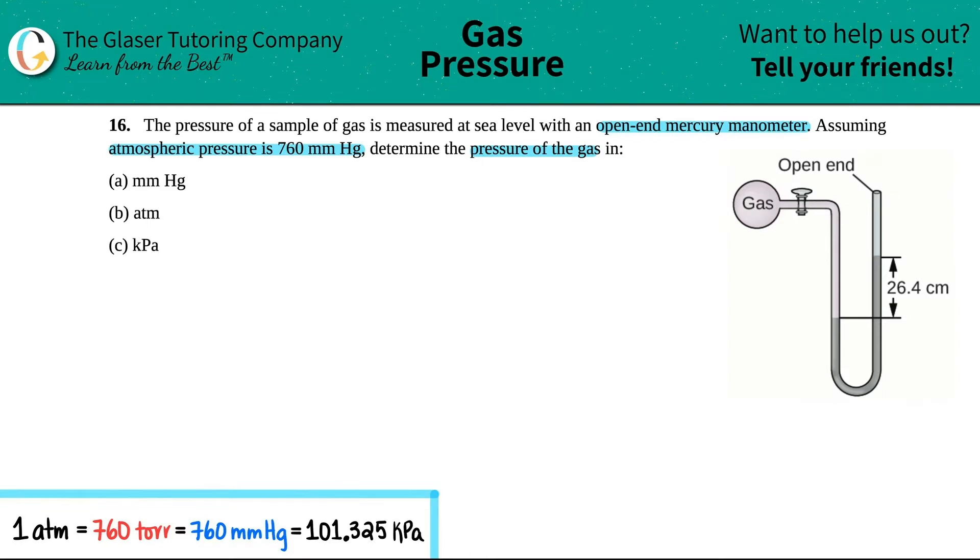And what an open-ended manometer means is that this side, this little opening here, is open to the external environment. So the atmospheric pressure is going to be involved with this manometer. The atmospheric pressure is interacting with this manometer. And I'm just going to put the number here that the atmospheric pressure is 760 millimeters of mercury.